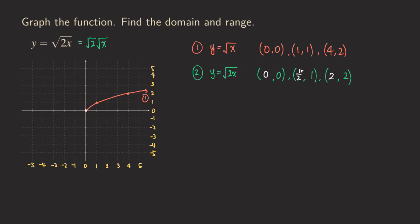When we plot those points, we get the second point at (½, 1) — the parent function had this at (1, 1), but now the x-value is halved. The third point moves from (4, 2) to (2, 2). So the points are being compressed toward the y-axis. Connecting them gives the graph of √(2x), which is compressed horizontally compared to the parent function.